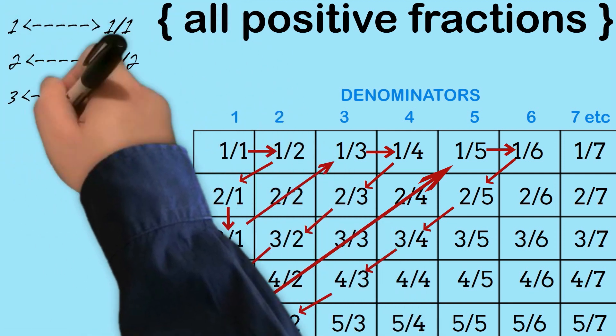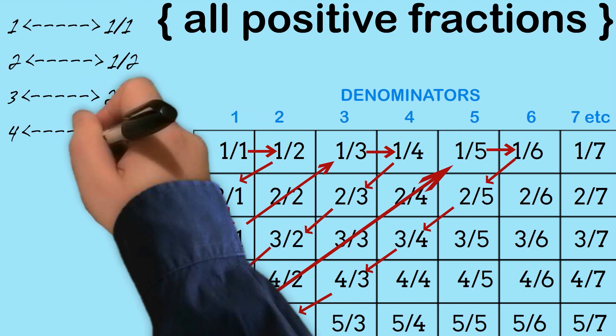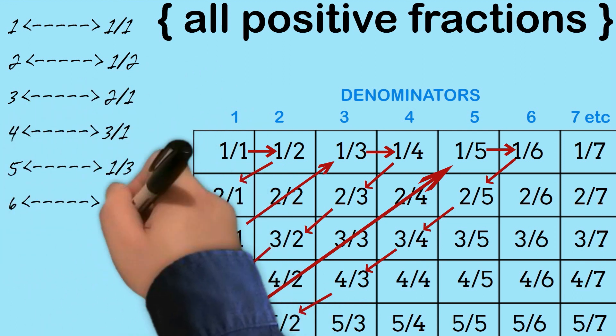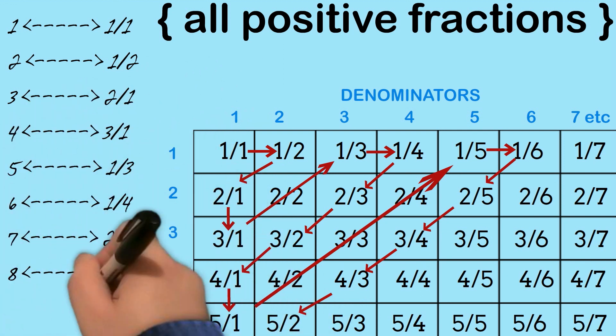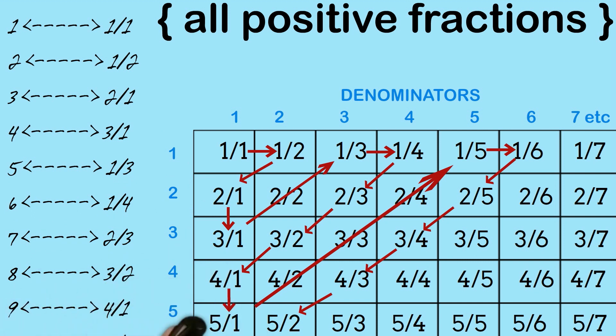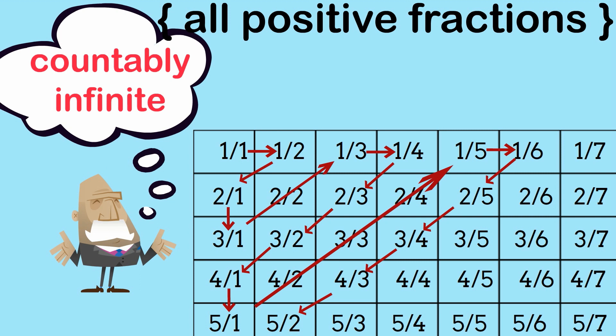Now if you want, you can actually work out some mathematical expression that will link the counting numbers to all the fractions. I haven't done that here, but clearly you could do that. I've started that process. So the set of rational numbers is countably infinite, just like it was for the integers, and just like it was for the counting numbers. But we'll see in a sec that that's not the case for the real numbers.